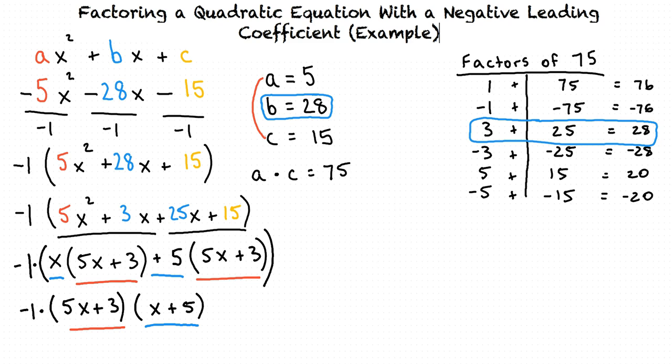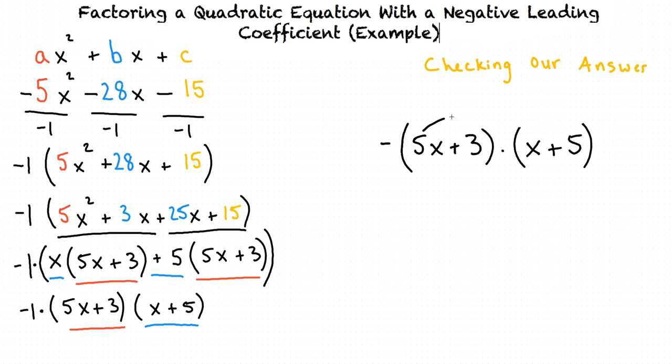The only step we have left is to check our answer. We can do this by multiplying our two factors using the FOIL method and then checking that answer to see if it matches up with our original quadratic equation. First, we multiply 5x times x, giving us 5x squared. Then we multiply 5x times 5, giving us 25x. Then we multiply 3 times x, which equals 3x, and 3 times 5, which gives us 15.